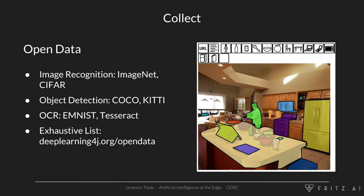Starting with the collect step — if you haven't collected a data set yet and you're looking for a place to get started, the amount of publicly available open source data is really incredible these days. If you want a more exhaustive list, deeplearning4j.org/open-data has 50 to 100 different open source data sets — they're large and very well documented. There's really no excuse not to get started. Shown here is an image from the COCO dataset, where people have painstakingly drew pixel by pixel boxes around every single object and labeled every single object — and you can use that to train a variety of different models.